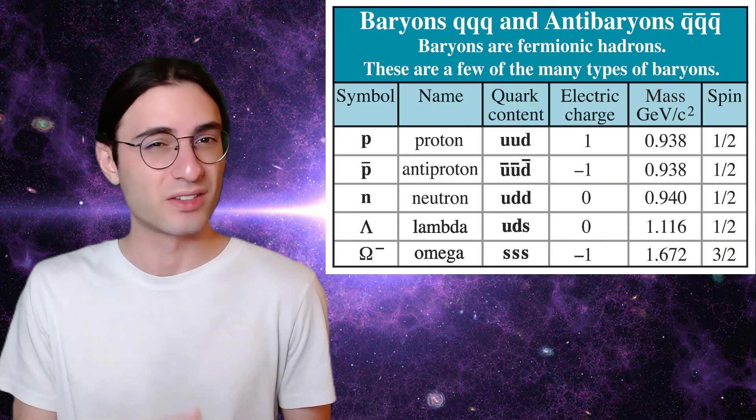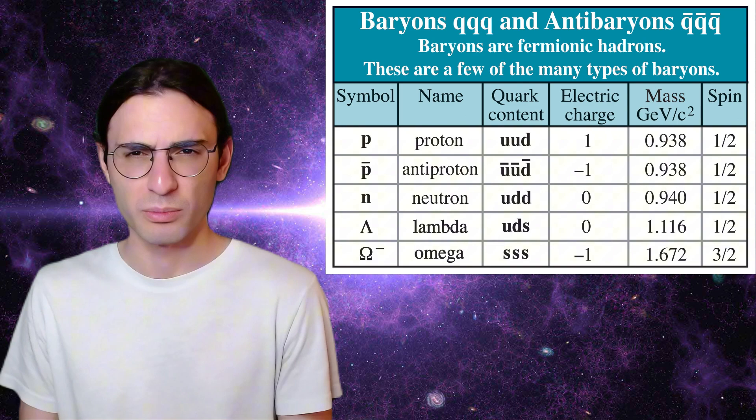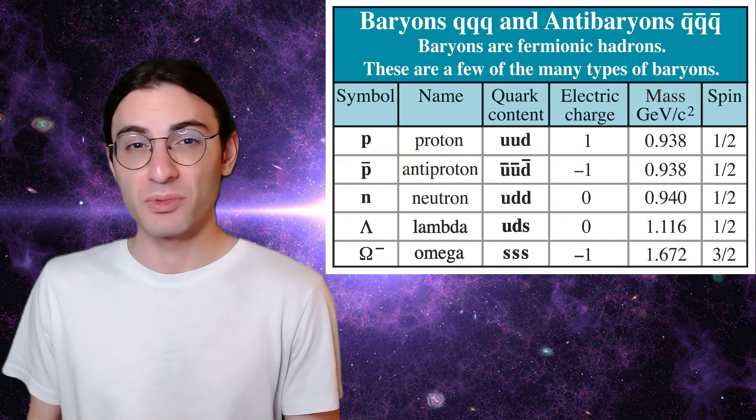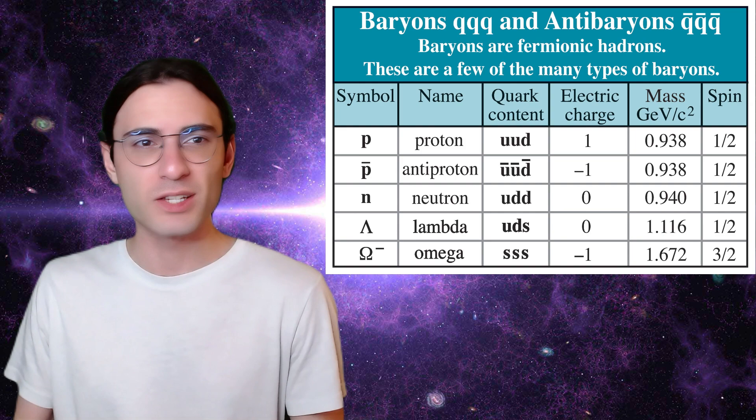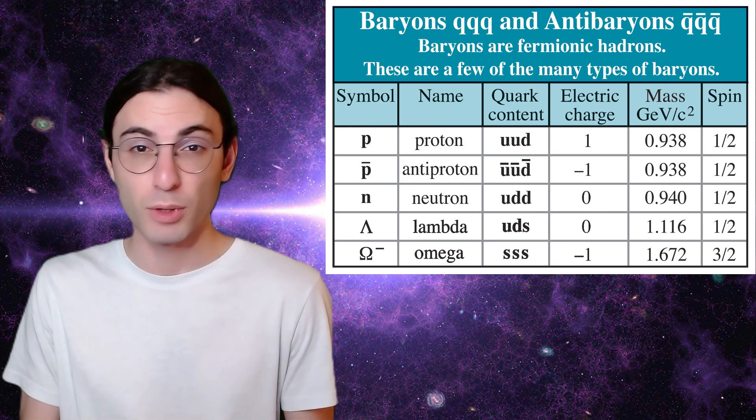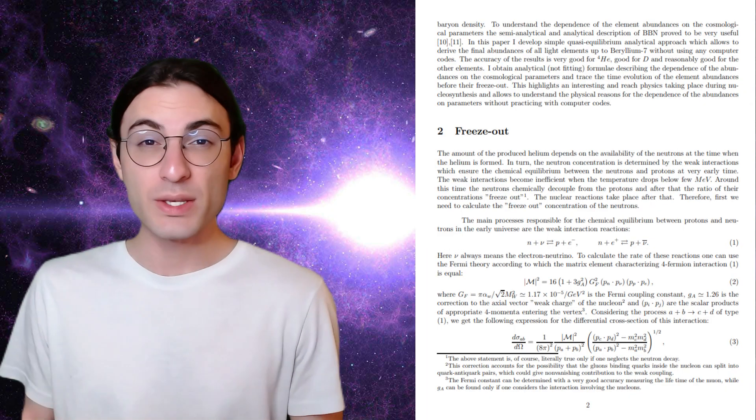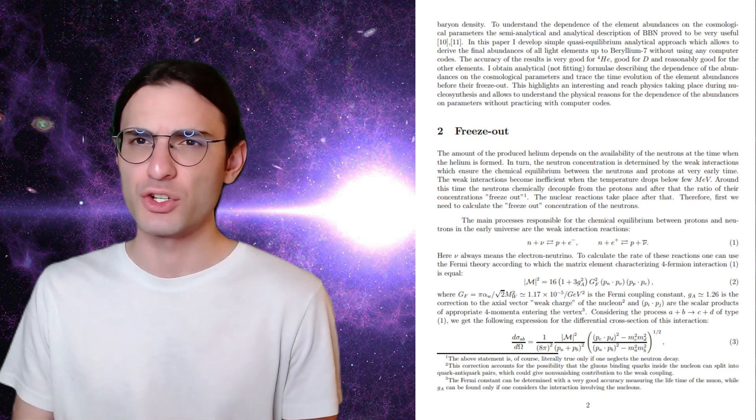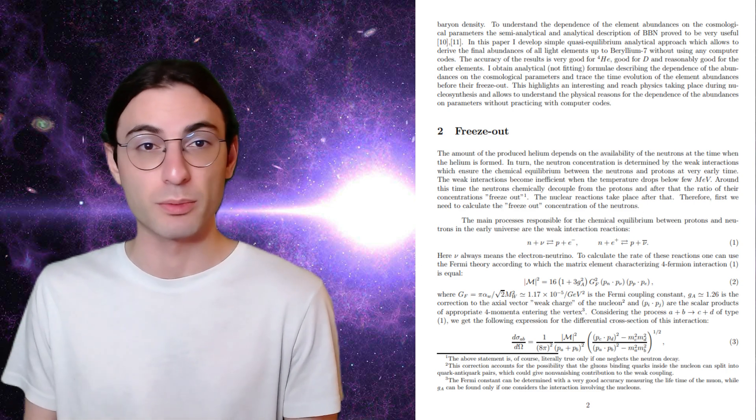And because they don't have exactly the same mass, the neutron is slightly heavier, the equilibrium state has slightly more protons than neutrons. Roughly, it's because it's easier for neutrons to turn into protons than vice versa. But as the universe expands and cools, the rate of conversion changes, meaning that the equilibrium distribution changes.